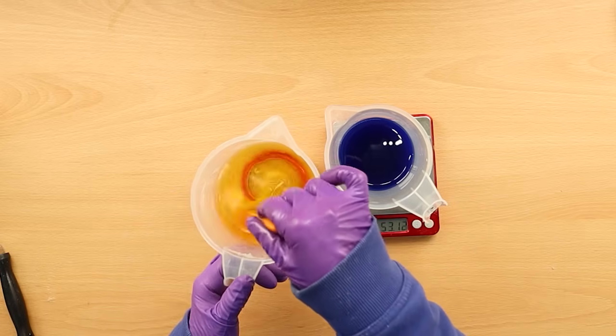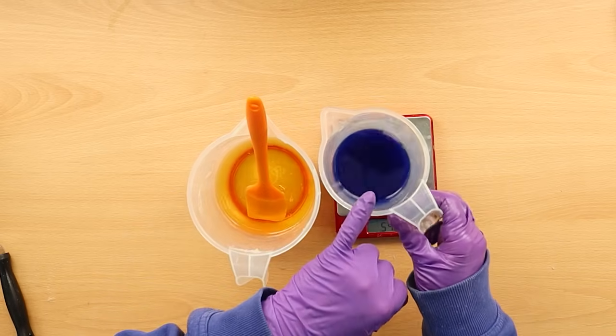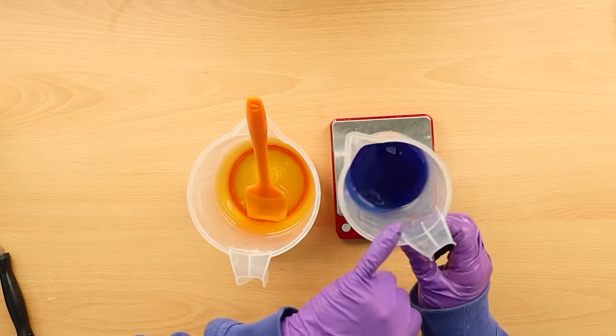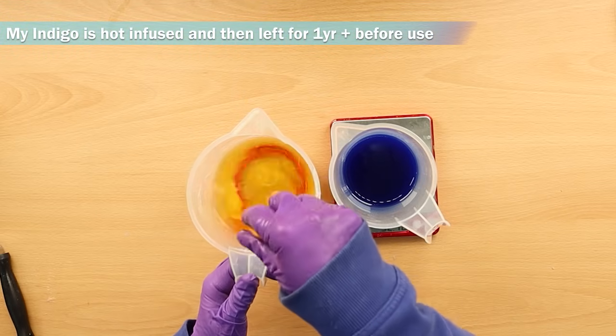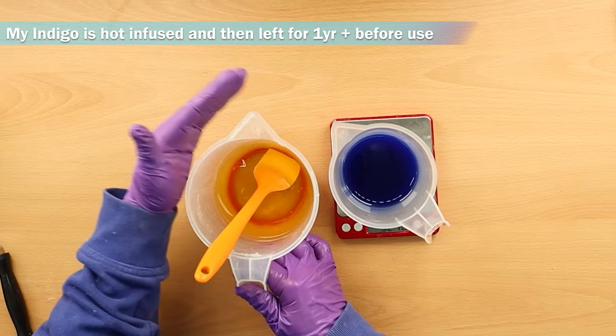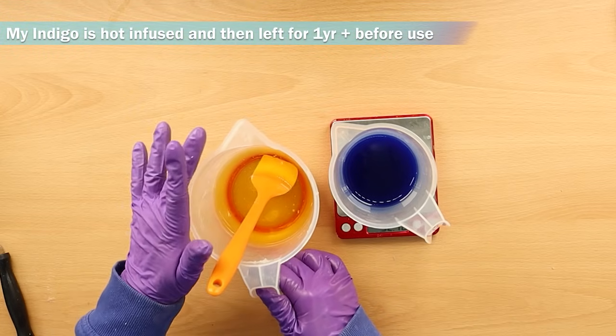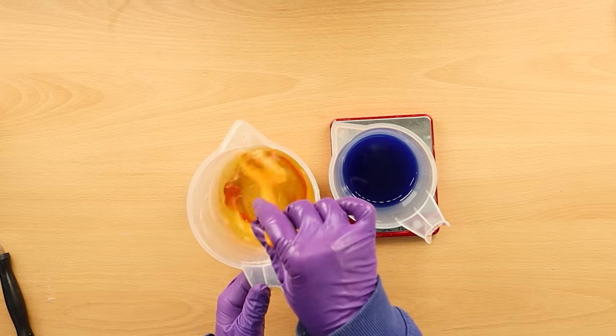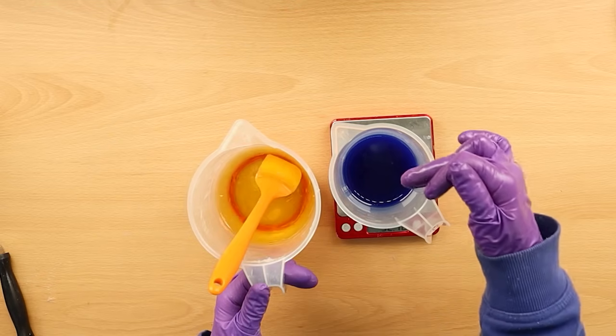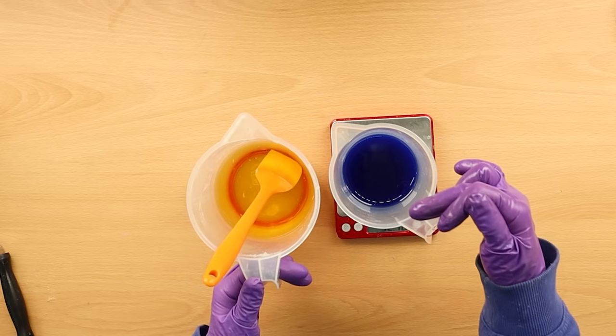What I'm starting off with here is some indigo infusion, just infused in olive oil, and some of my normal master batch. Now when I master batch for natural soaps, what I do is I master batch all of my oils apart from my olive oil, because I then use olive oil for my infusions.